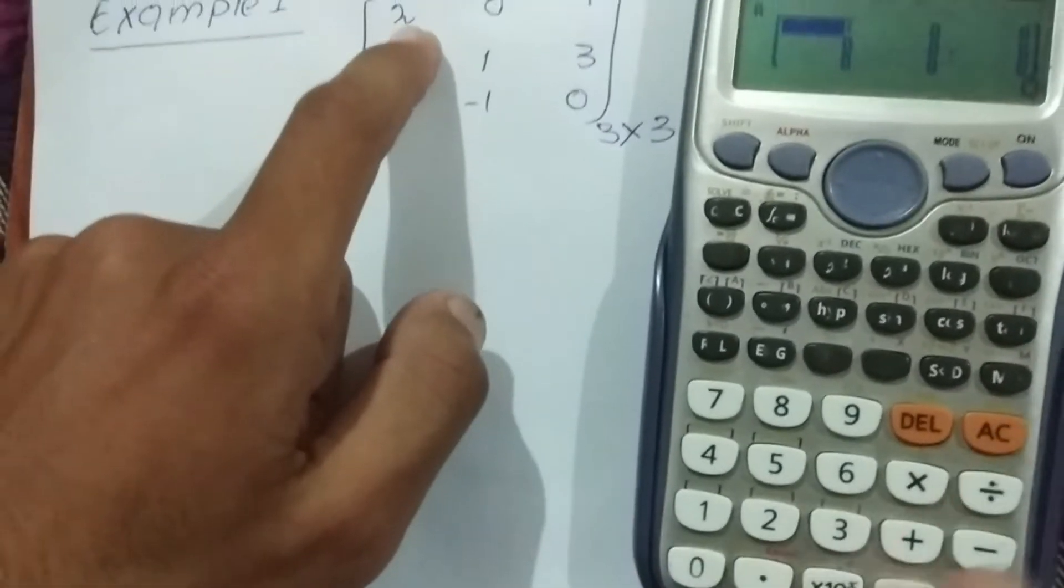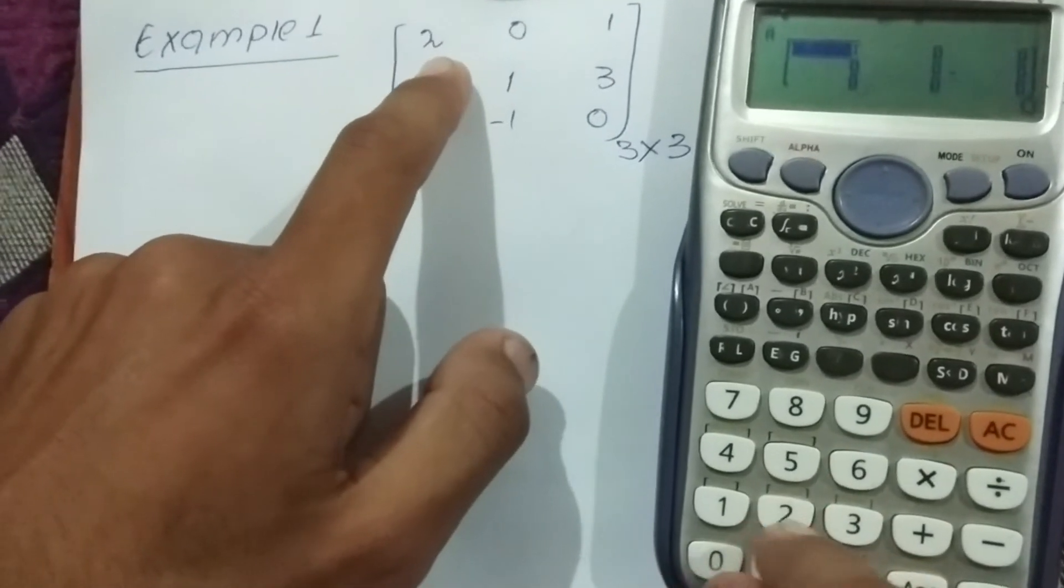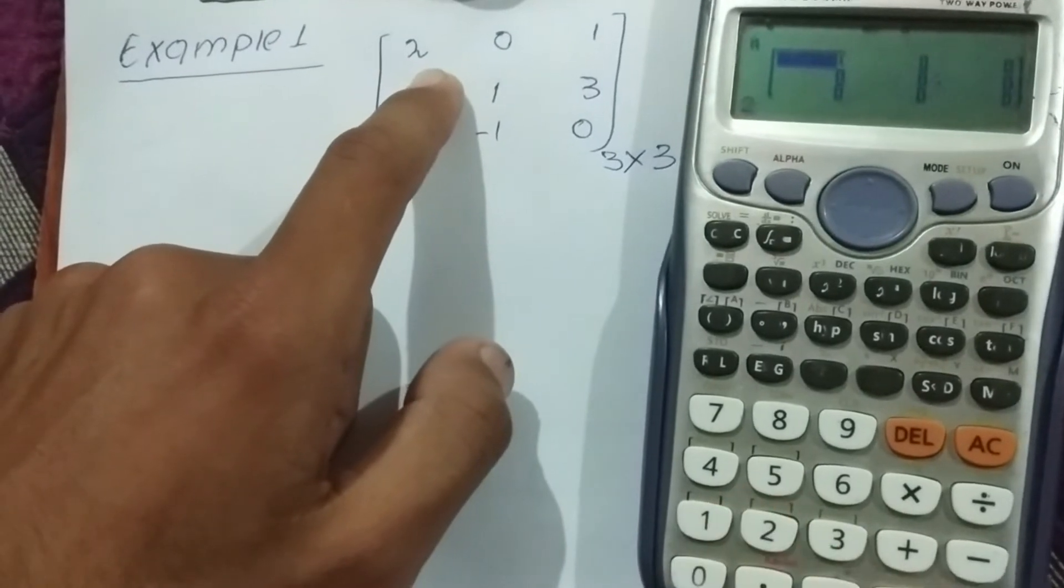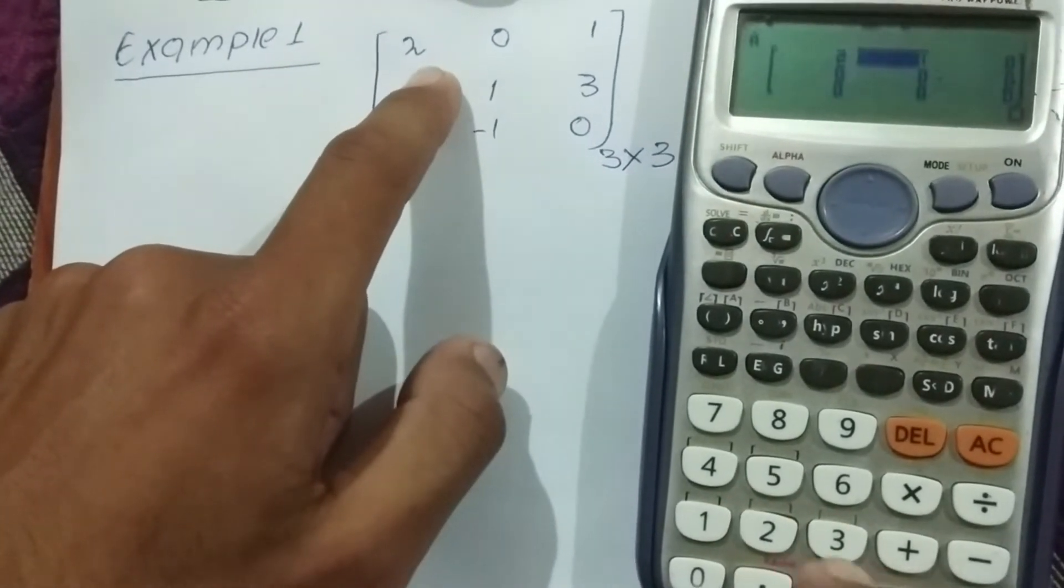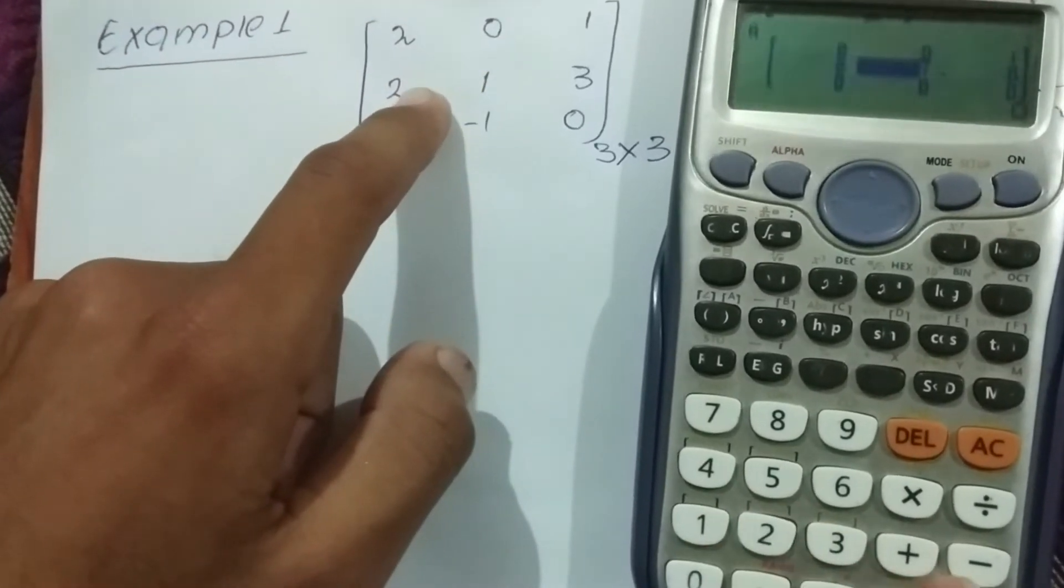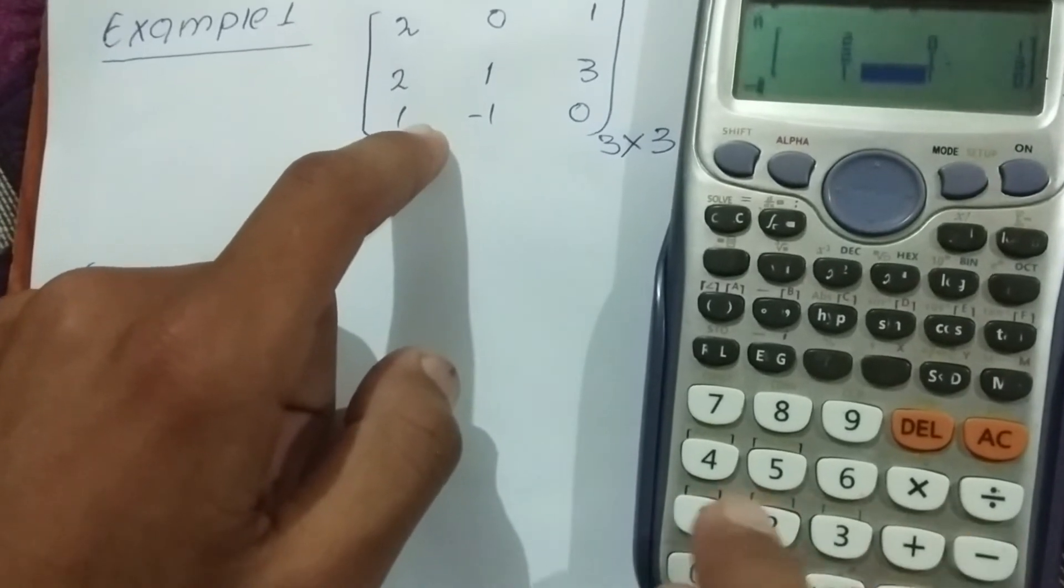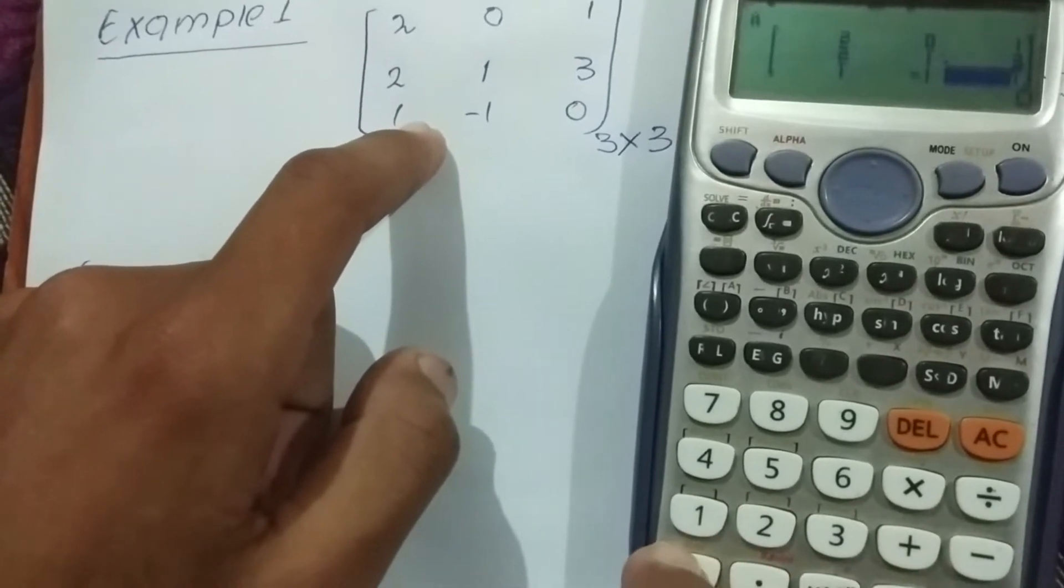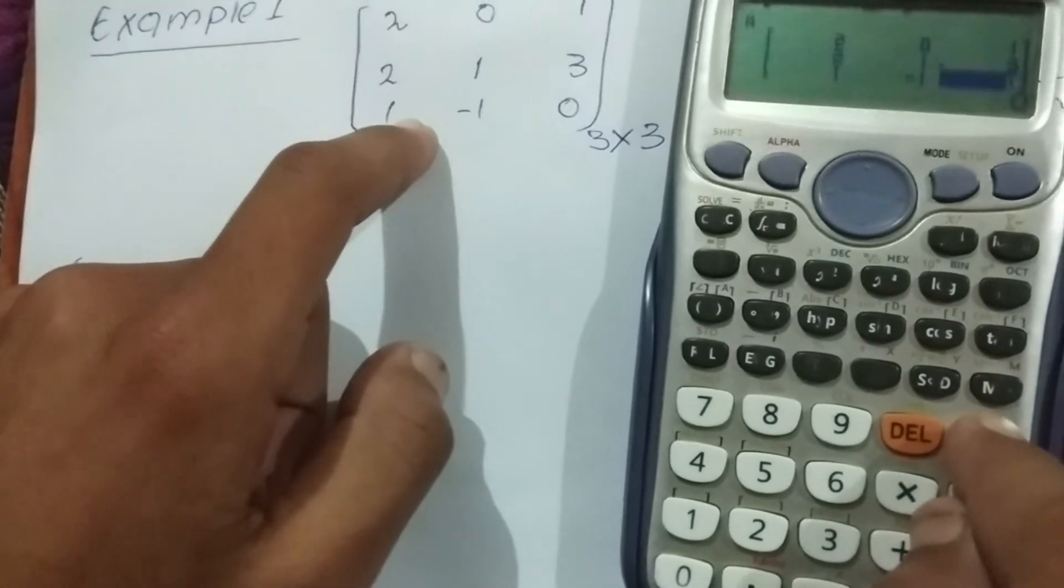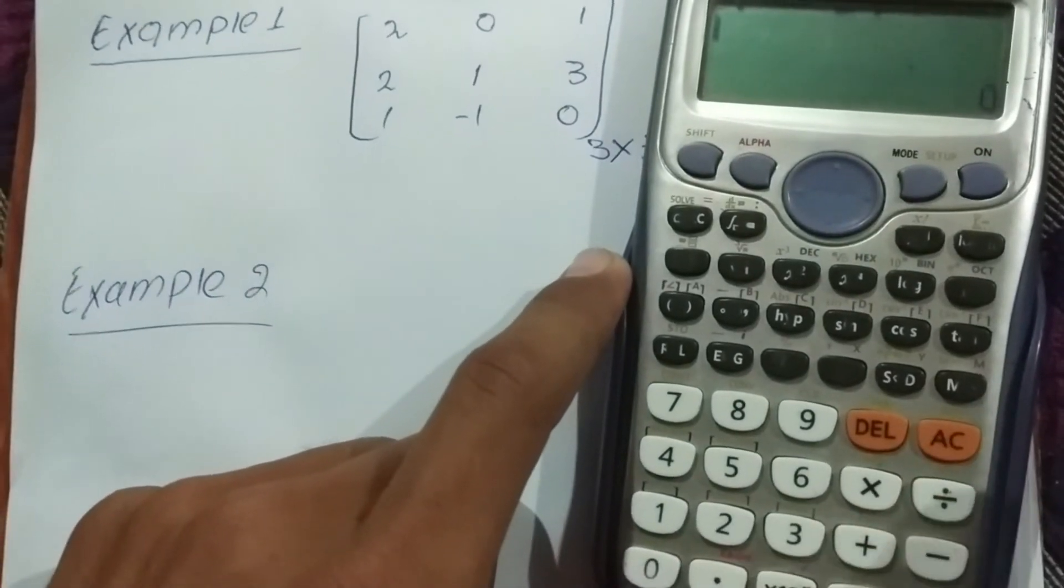Let's see, we want to save our matrix in mat A. We can save here, it's up to us, our choice. So we are going to save our matrix in mat A. Press A button as this is in A option. As this matrix is 3x3, 3 rows and 3 columns, 3x3, so we are going to select here 3x3 option. This is in 1 key, press 1. Now put the entries, first of all 2. See here carefully how to put entries in matrix form. 2 then equal to button, then 0 equal to, then 1, 2, 1, 3, 1, minus 1 and 0.